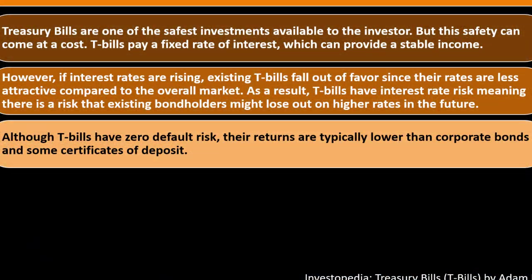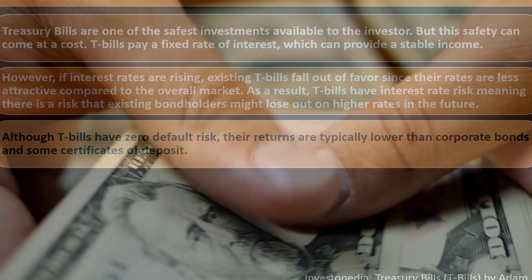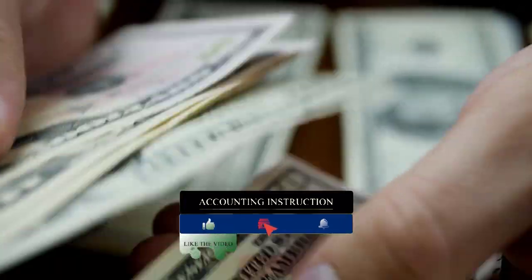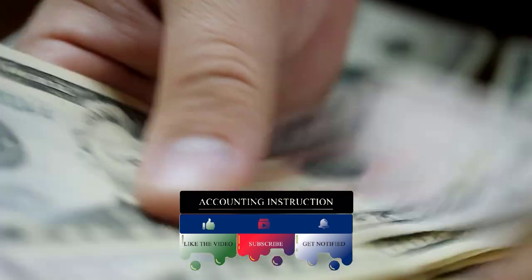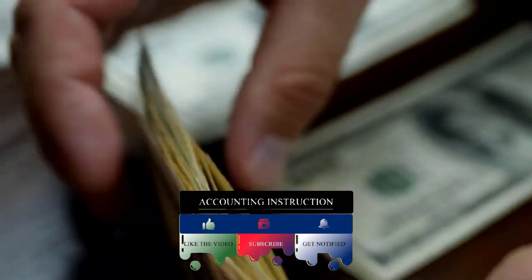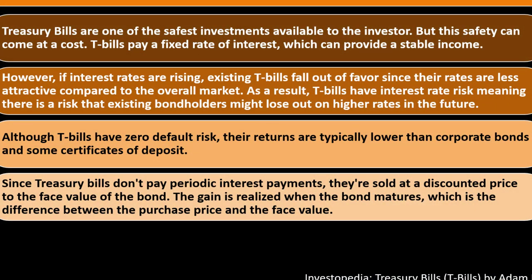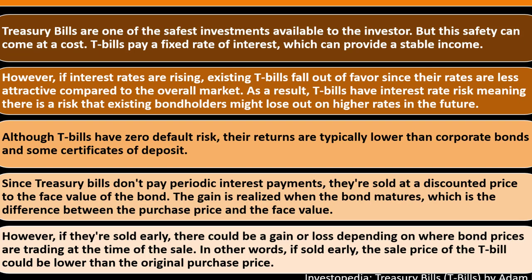Although T-bills have zero default risk, their returns are typically lower than corporate bonds and some certificates of deposit. Corporations can't print money, and something could happen causing them to go under, so they're not as safe as U.S. Treasury bills. Since Treasury bills don't pay periodic interest payments, they're sold at a discount price to the face value of the bond. The gain is realized when the bond matures — the difference between the purchase price and the face value. However, if sold early, there could be a gain or loss depending on where bond prices are trading at the time of the sale.